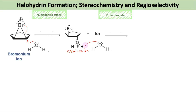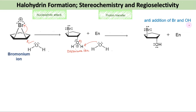The resulting oxonium ion is then deprotonated to give the product. The net result is the anti-addition of Br and OH across the alkene. The product is called a bromohydrin. When chlorine is used in the presence of water, the product is called a chlorohydrin. These reactions are generally referred to as halohydrin formation.